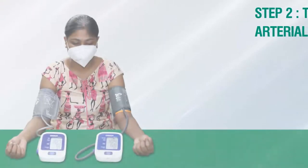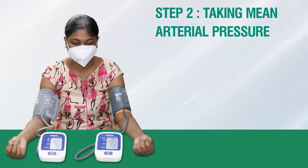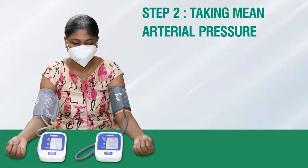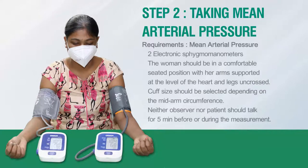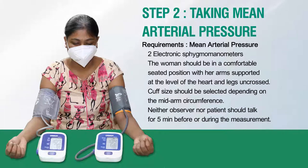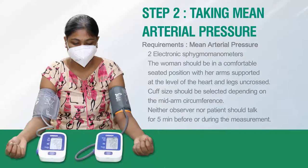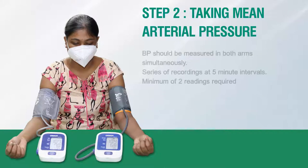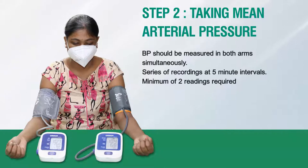Step 2 is to take the mean arterial blood pressure. We should follow certain guidelines to measure MAP for uniformity. We need two electronic sphygmomanometers. The woman should be in a comfortably seated position with her arms supported at the level of the heart — if arms are not at heart level, MAP can be over- or underestimated. Her legs should be uncrossed, she should be quiet for five minutes, and then blood pressure should be measured in both arms simultaneously, taking two readings at five-minute intervals.